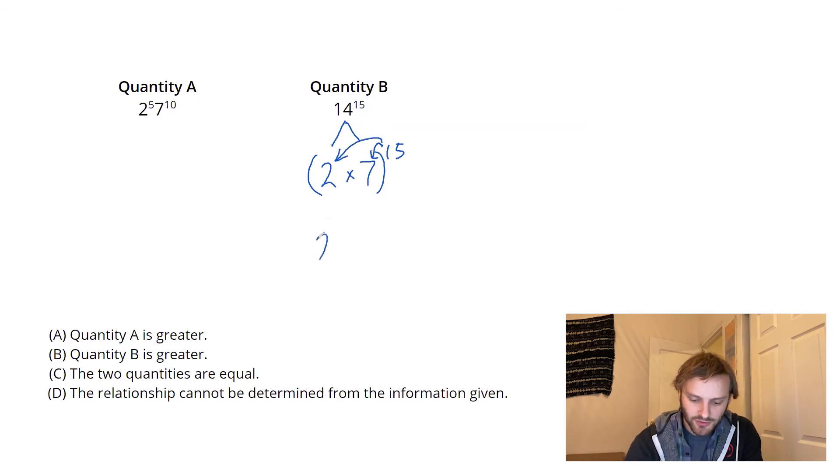And what happens then is that the exponent distributes itself. So, it's going to come down onto the 2, 2 to the 15th, 7 to the 15th. And now check this out. I don't have the same exponents, but now I have the same bases. I have a base of 2 and 7 on the left and a base of 2 and 7 on the right in quantity B.